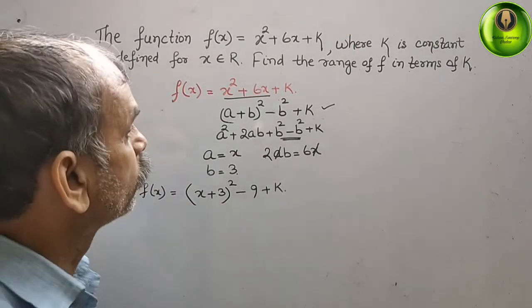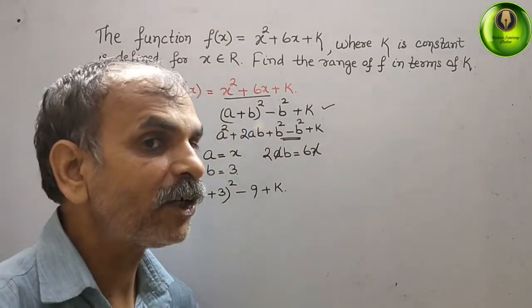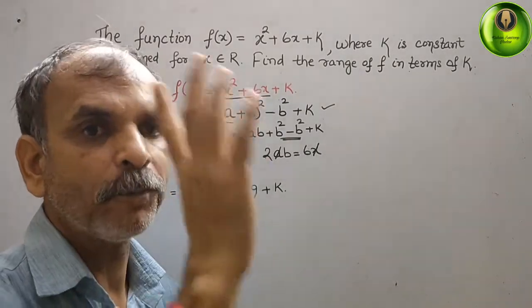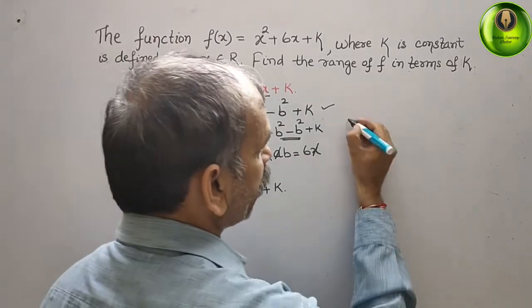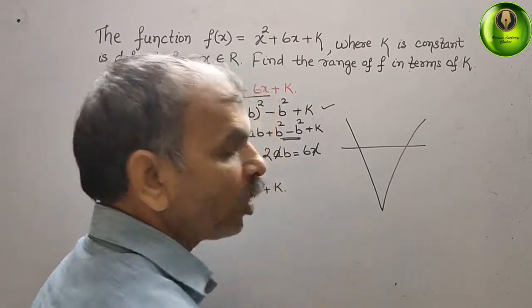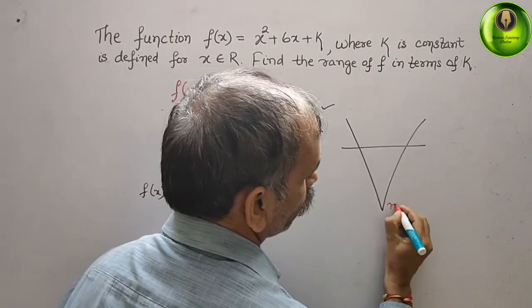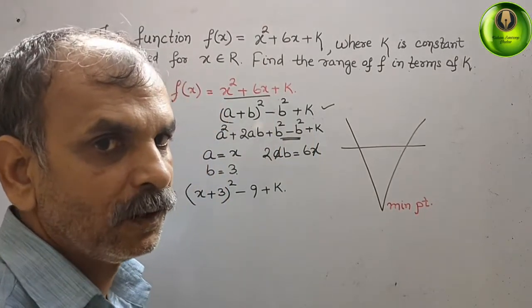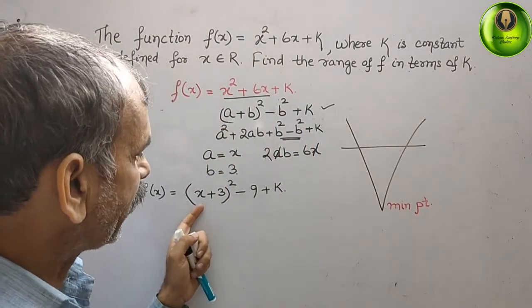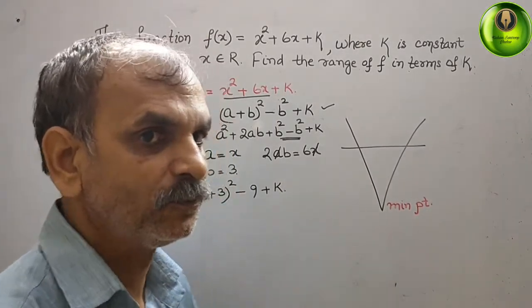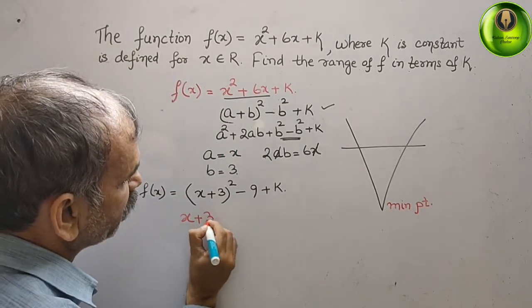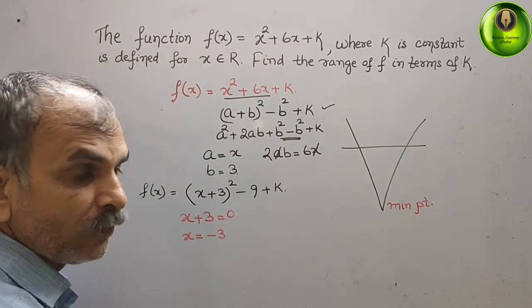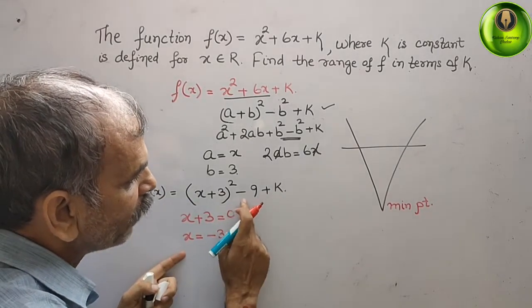Looking at the equation, the coefficient of x² is positive, which means we will get a minimum point and the graph is a upward-opening parabola. Setting x + 3 = 0 gives x = −3, and substituting back gives f(x) = −9 + k.